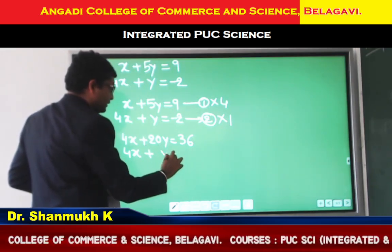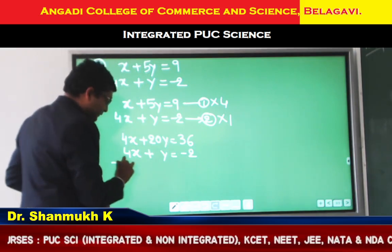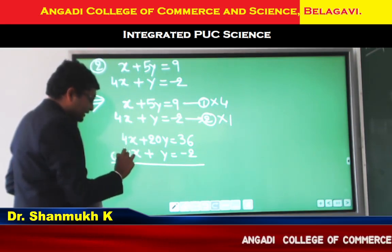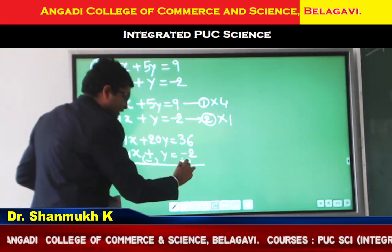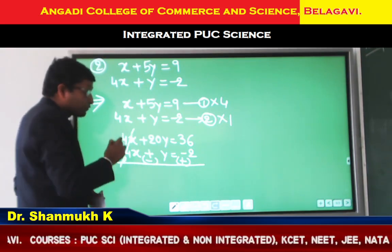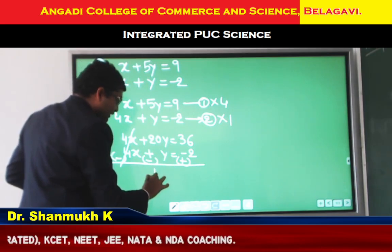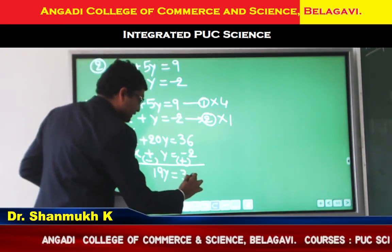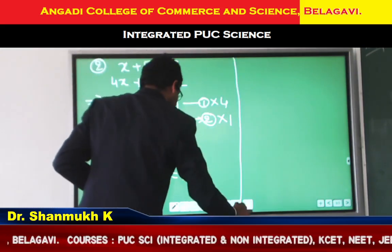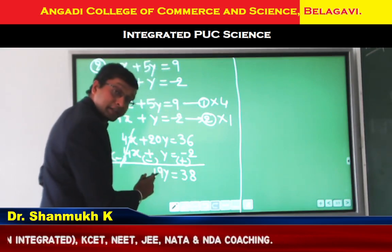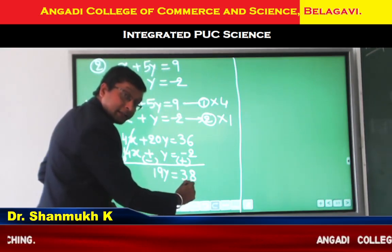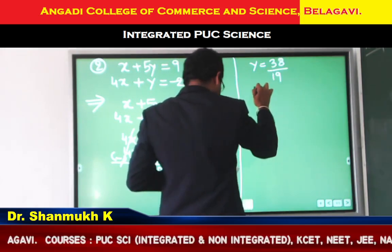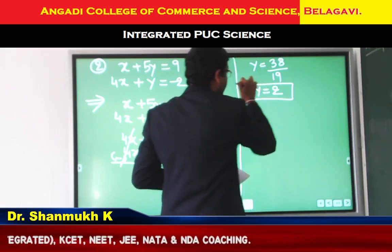1 multiplied with the second equation gives no change: 4X plus Y equal to minus 1. Changing the sign for subtraction: plus 4X minus 4X cancels. 20Y minus Y gives 19Y. And 36 minus minus 1 gives 36 plus 2 — we get 38. So 19Y equal to 38. Transposing 19, it is division: Y equal to 38 divided by 19. So we get the Y value as 2.